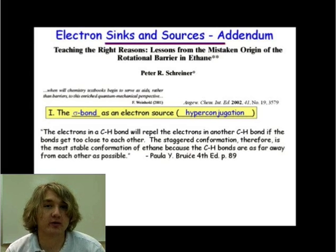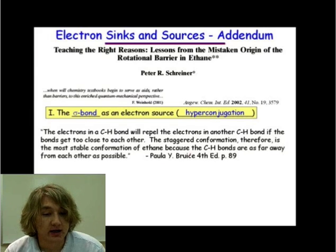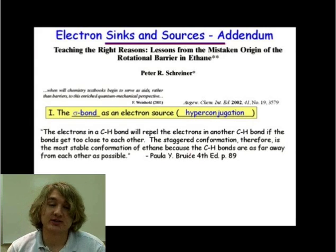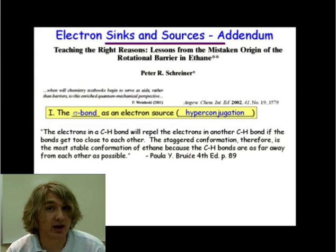We talk about the rotational barrier for ethane. And according to Bruce in the fourth edition, these electrons in the C-H bond will repel the electrons in another C-H bond if they get too close together, based on steric interactions. They'll have an eclipsing interaction, they will repel each other by sterics.